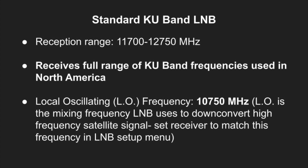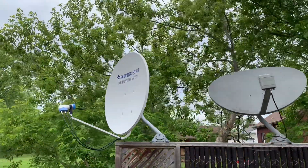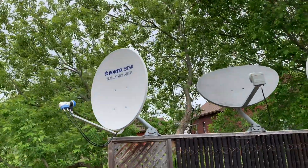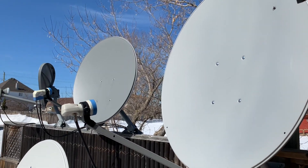Interestingly, you can really only use a standard KU band LNB in North America. In Europe and Asia, the bandwidth for KU band satellite is much wider — from 10,700 to 12,750 megahertz. So you need to use a universal LNB if you live in Europe or Asia, because if you used a standard KU band LNB, you'd only be getting about half the channels available.